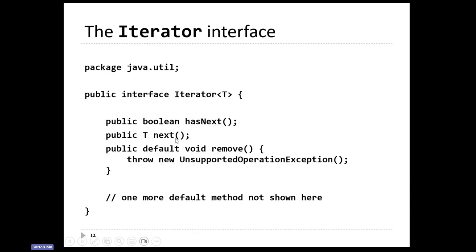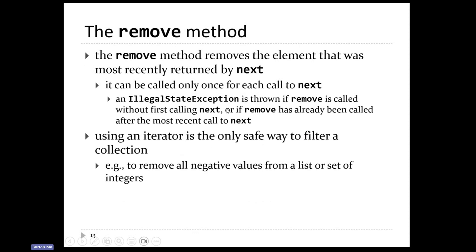Remember the way you use an iterator: you call next, which gives you the current element in the iteration, and then the iterator moves to the next element. So next does two things — it returns the current element and moves to the next. HasNext returns true if there are still more elements to look at. Remove removes the element most recently returned by next. You have to call next before you can call remove, and furthermore, you can only call remove once each time you call next. If you call remove without first calling next, or if you've already called remove for the most recent call to next, you get an illegal state exception.